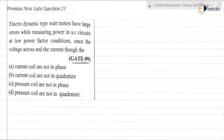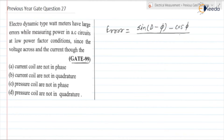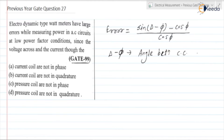So if you recall, in an EDM type watt meter, the error is equal to sine of (delta minus phi) minus cos phi, divided by cos phi. Here, delta minus phi is the angle between the current coil and the pressure coil.